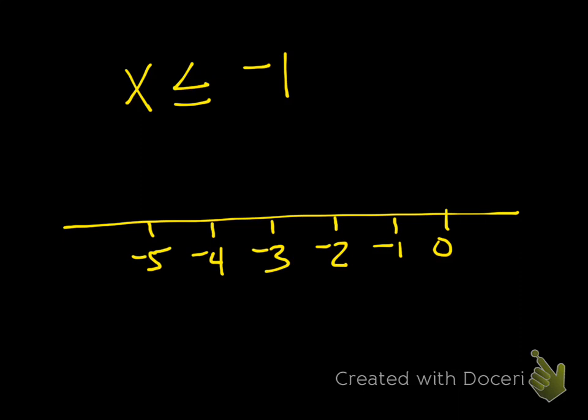It does, because of this sign right here, the equal part of the inequality tells you that it does include 1. So we don't put an open circle, because that means that it does not include 1. You want to put a full circle, because that's saying that it starts at negative 1, and it's any number that is less than negative 1.